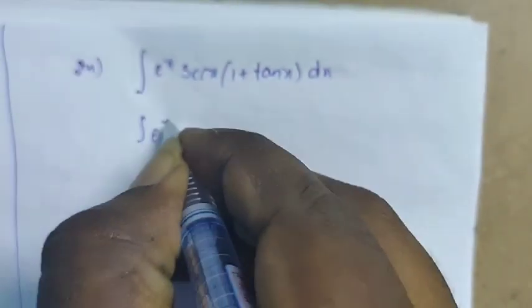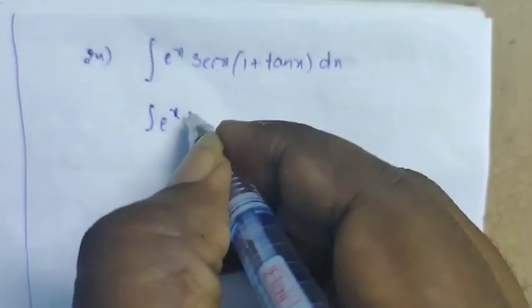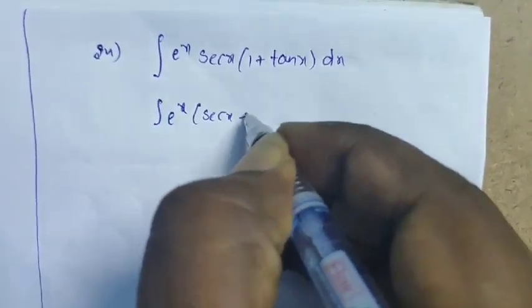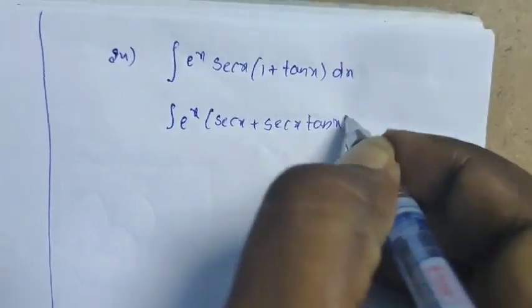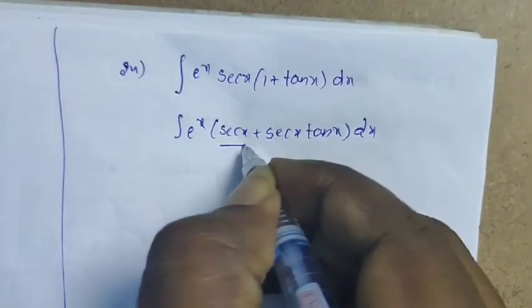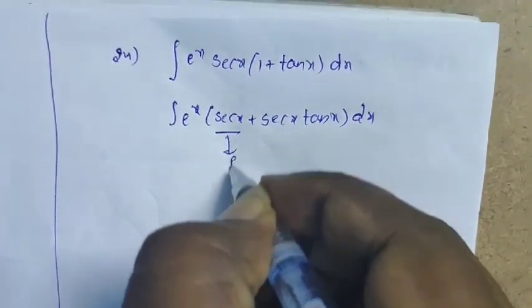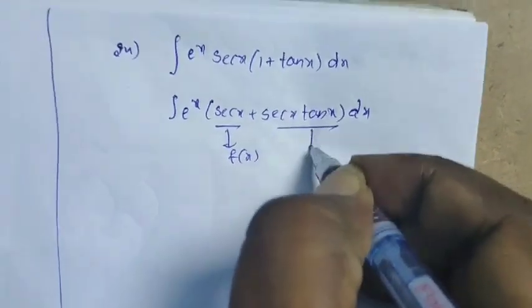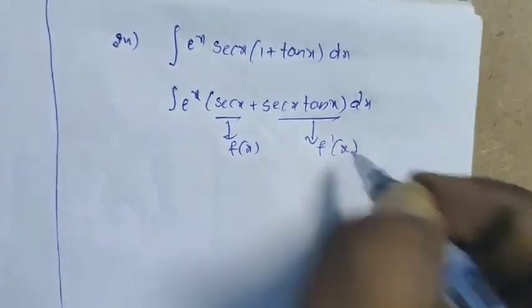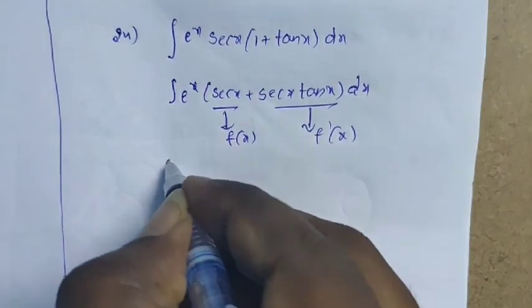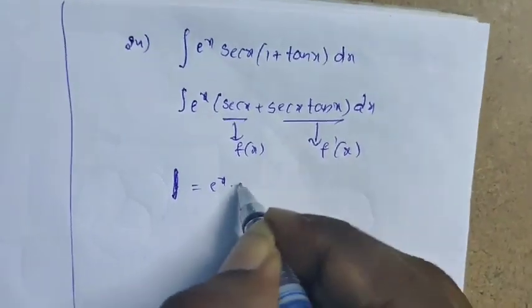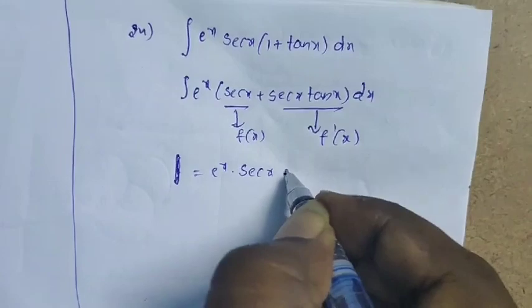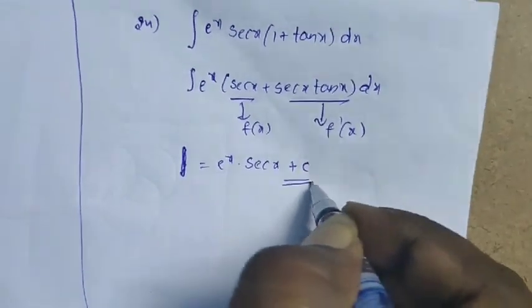Now, a last problem: the integral of e^x · [sec(x) + sec(x)·tan(x)] dx. Here sec(x) is f(x) and sec(x)·tan(x) is f'(x). According to the formula, the answer is e^x · sec(x) + constant, that is e^x · f(x).